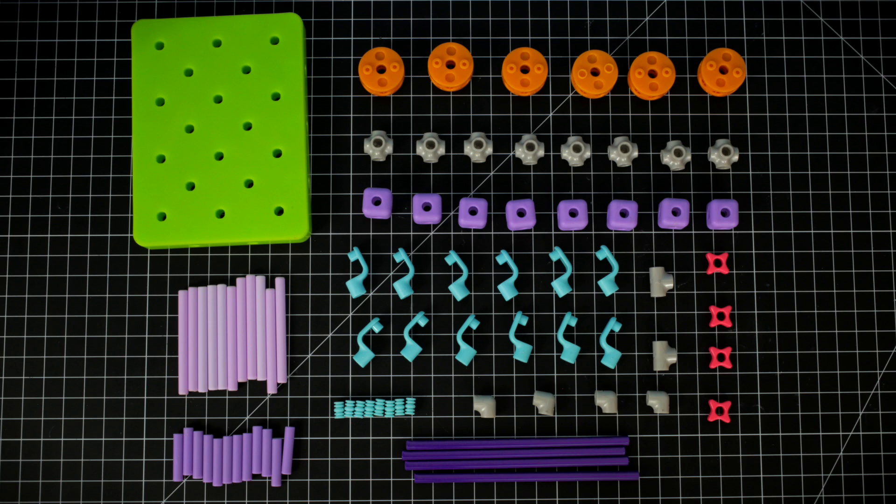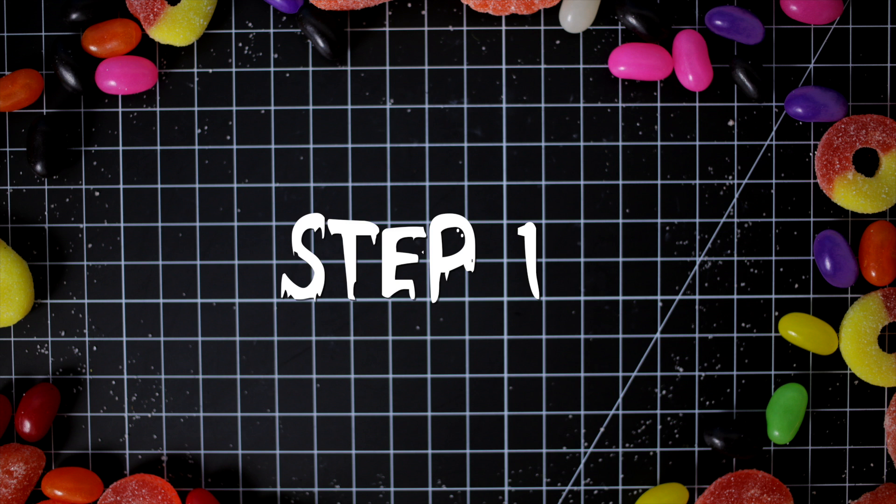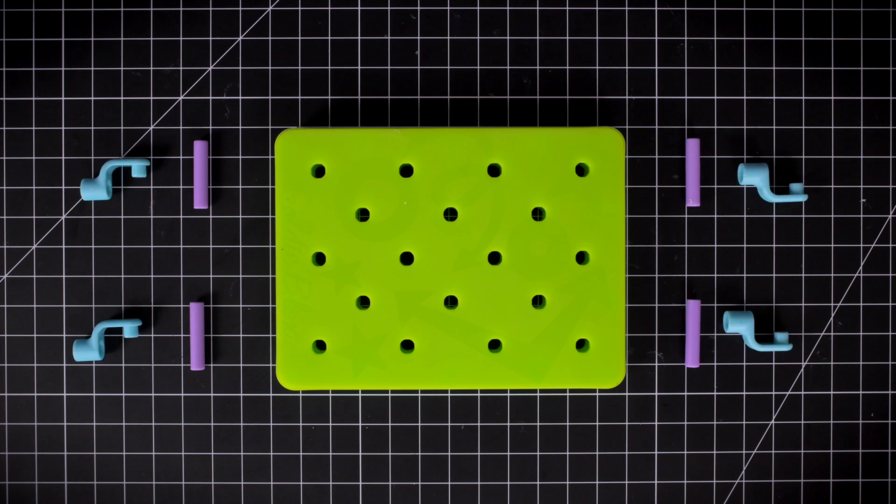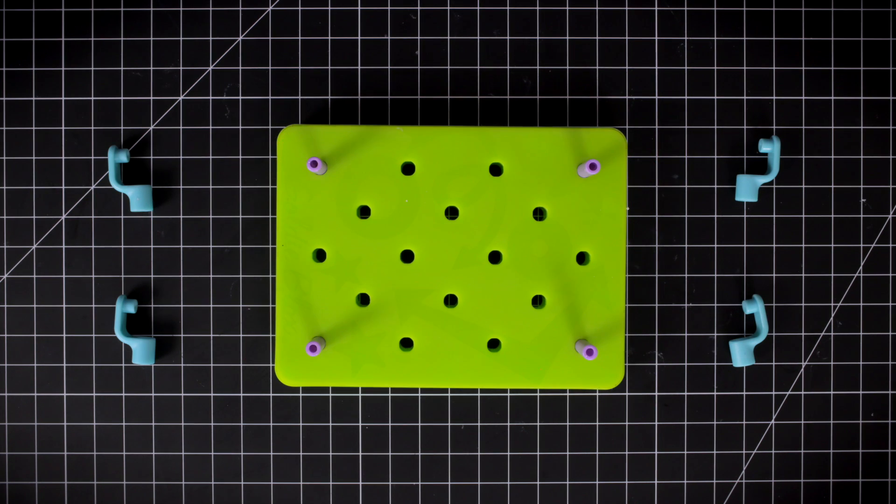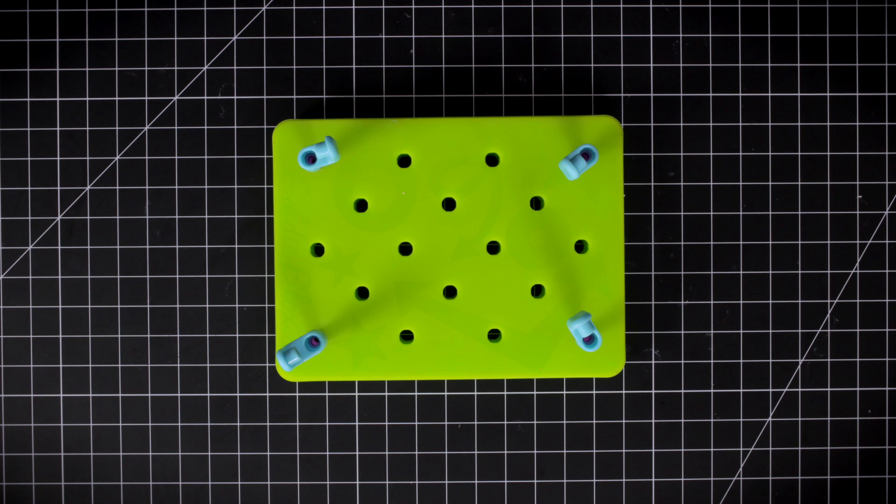Remember, you can pause the video any time if you need to catch up! Step one: Place four mini axles in each of the corners of your green pegboard. Add an angle joint to each one.